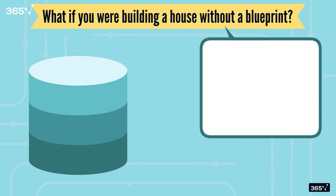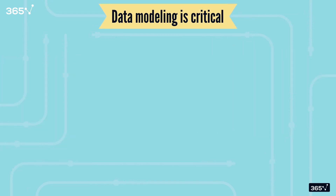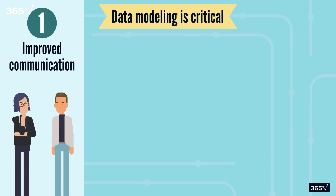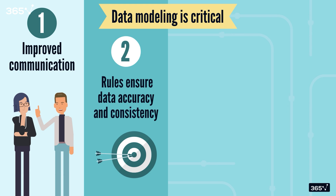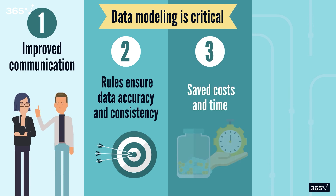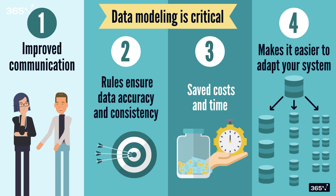The same principle applies to data. Without a clear model, you risk building systems that are inefficient, inconsistent, and hard to maintain. So data modeling is critical because: 1. A data model improves communication between different stakeholders — like developers, analysts, and business leaders — by acting as a common language between them. 2. With a model in place, you can set rules for your data, ensuring accuracy and consistency, and therefore improving overall data quality. 3. A good data modeling exercise also potentially saves cost and time, because catching and fixing issues during the modeling phase is much cheaper than fixing them after the system is built. 4. And finally, a well-designed data model makes it easier to adapt and grow your system as business needs evolve, making your architecture scalable.